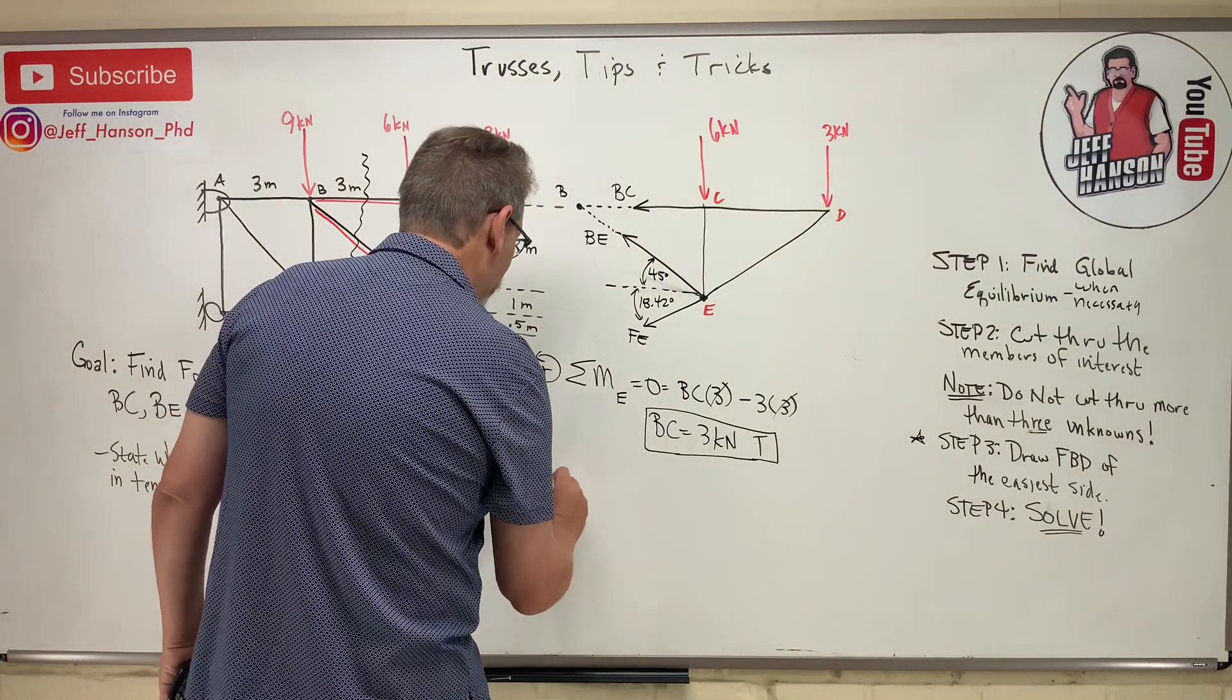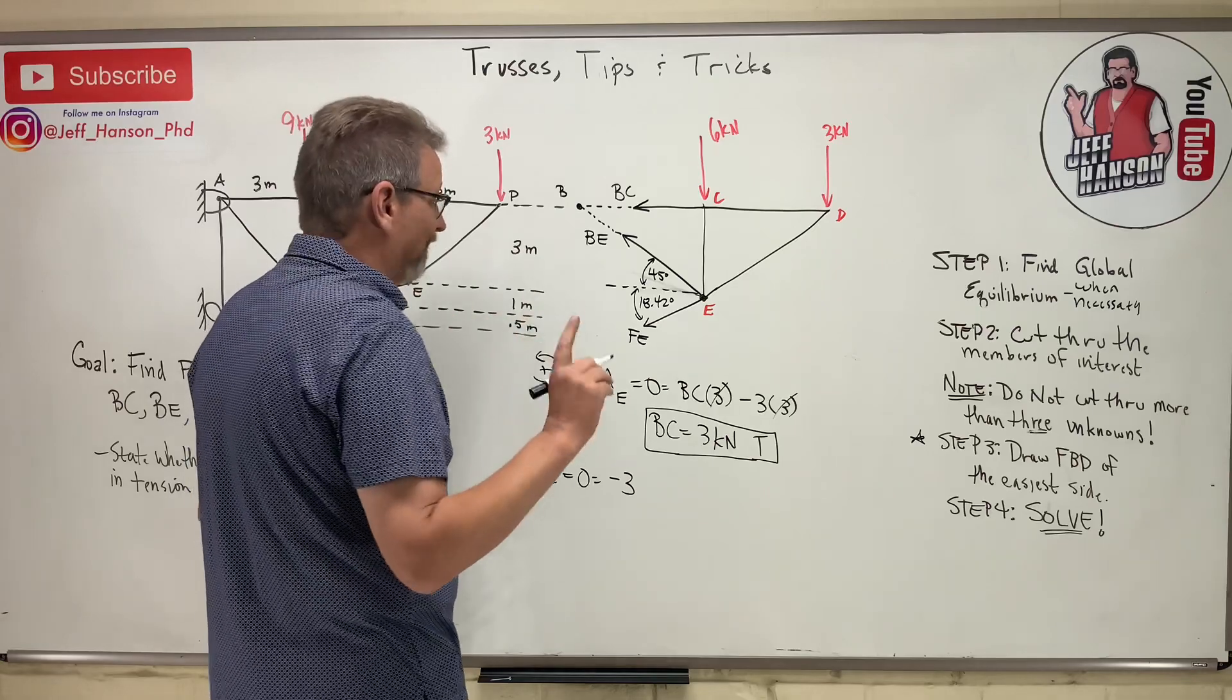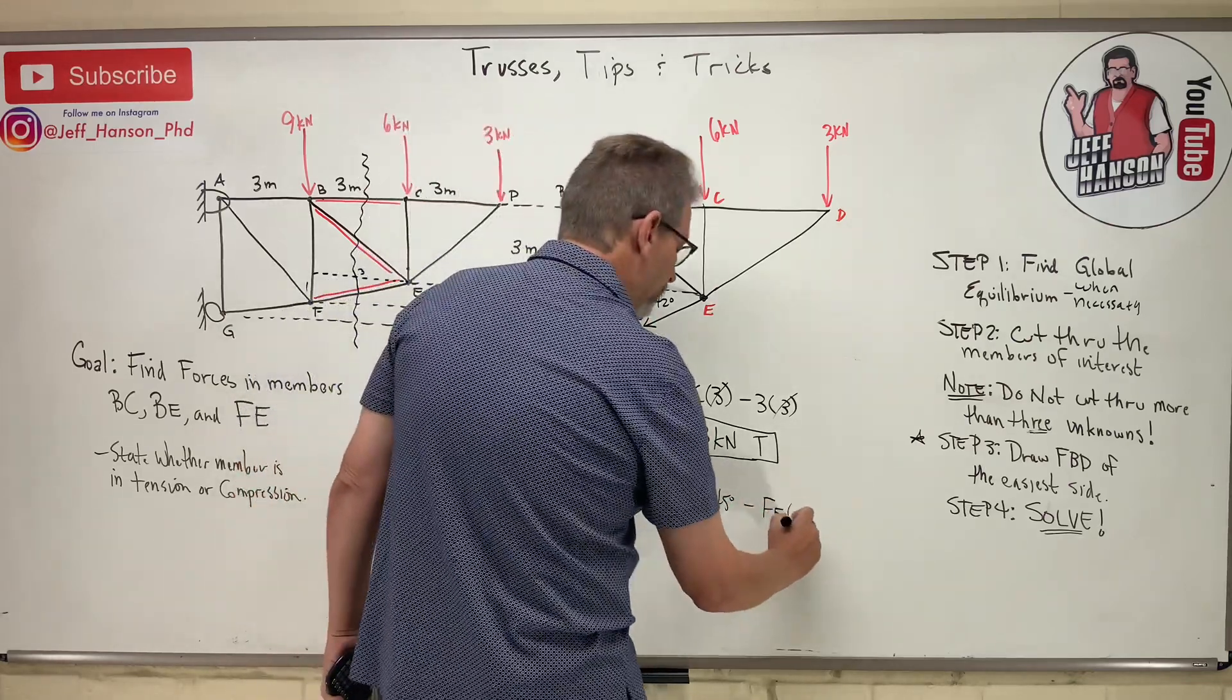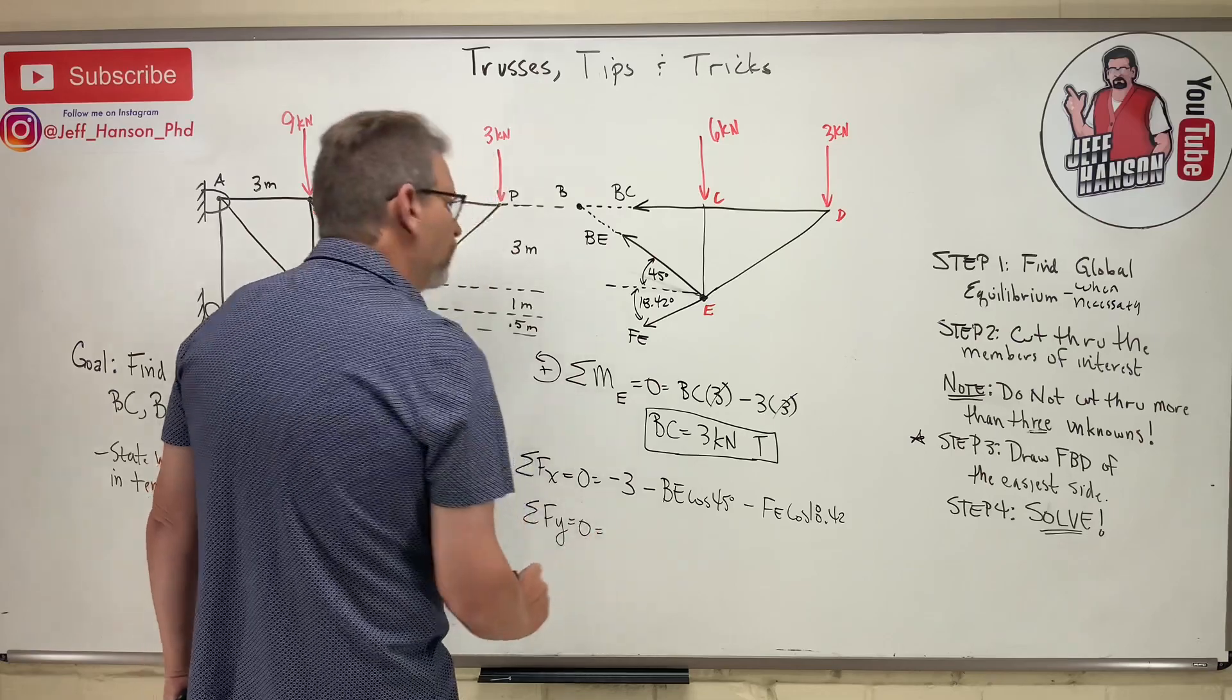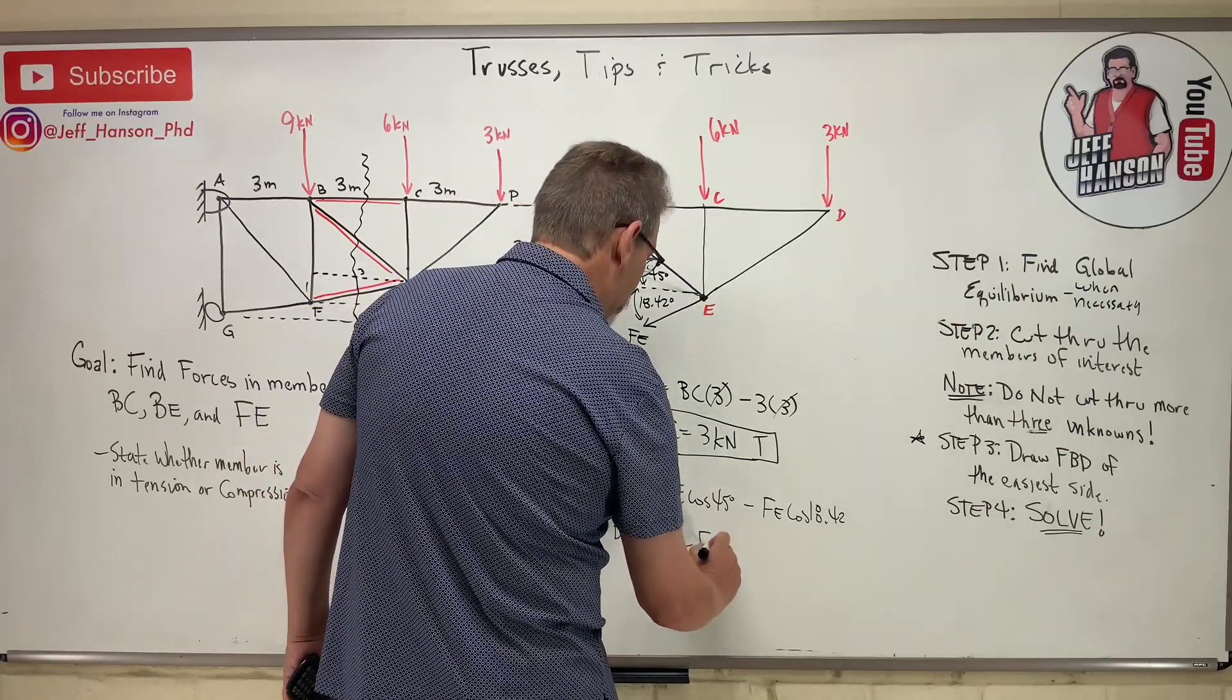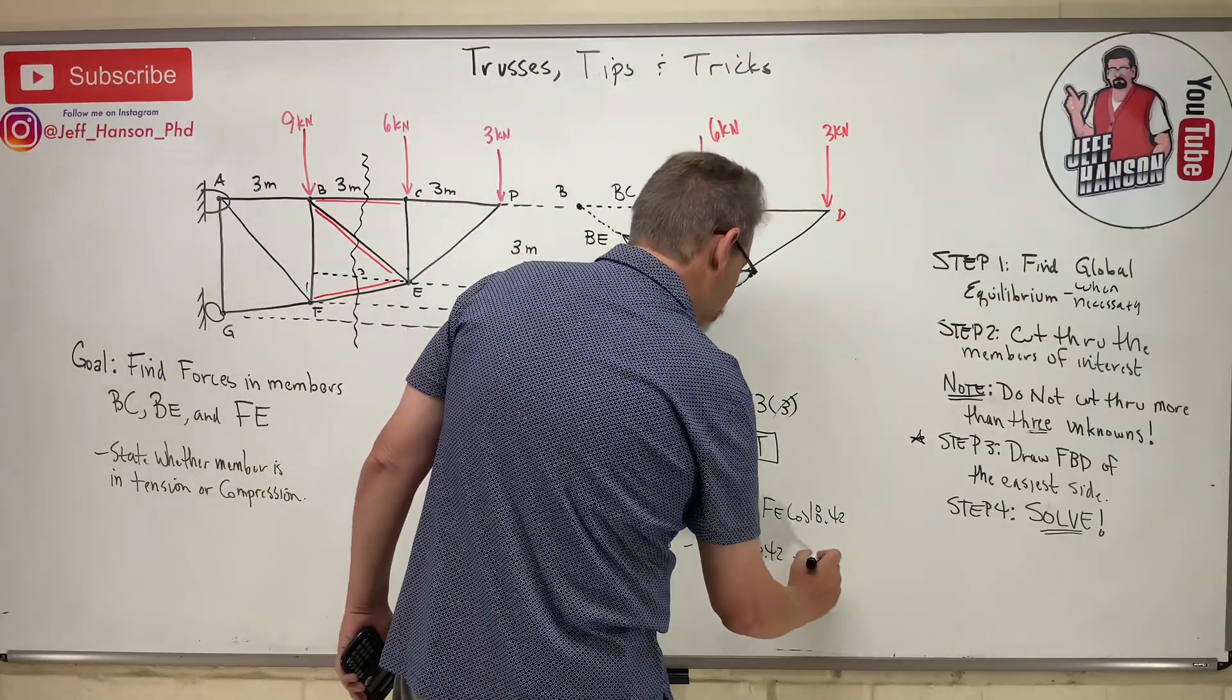Sum of the forces in the X is equal to, in the X direction, what do we have? We have BC, which is three, but he's going in the minus direction. Everybody's going in the minus direction. Minus BE cos 45 and then minus FE cos 18.42. And then the sum of the forces in the Y, what do I get in the Y direction? I get this guy going uphill. So BE sin 45 and then minus FE sin 18.42 and then minus nine. Six plus three is nine. Going downhill, minus nine.